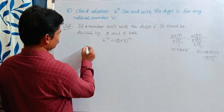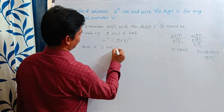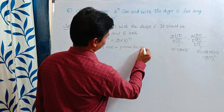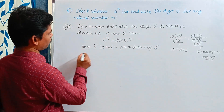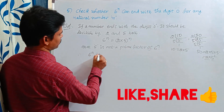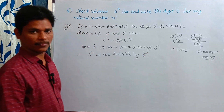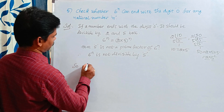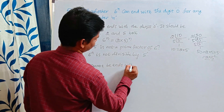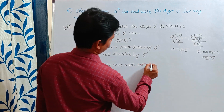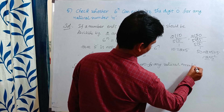Here, 5 is not a prime factor of 6^n. So, therefore, 6^n is not divisible by 5. So 6^n cannot end with the digit 0 for any natural number n.